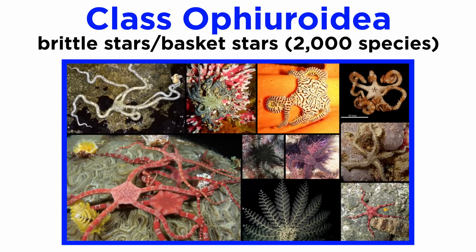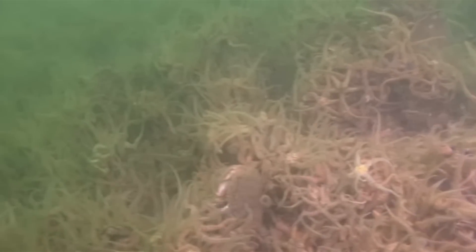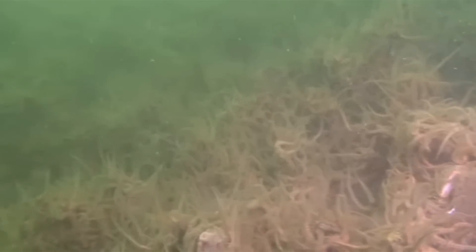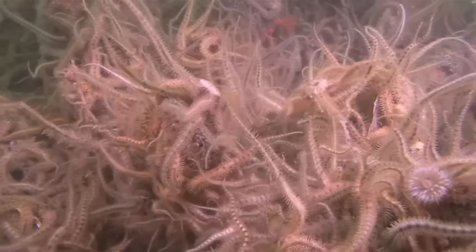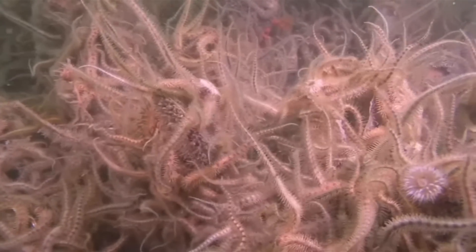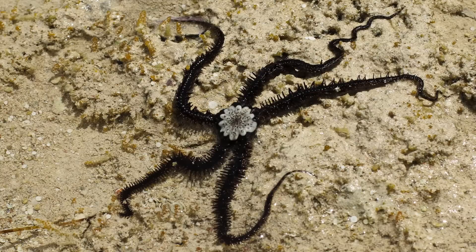Next up, species in class Ophiuroidea are called brittle stars, or basket stars. Of the more than two thousand extant species of brittle stars, more than twelve hundred of them are found in deep ocean waters. They are some of the most common animals in some types of benthic marine habitats, where they may carpet the floor in what appears to be a living mass. Though they superficially resemble the sea stars, they are remarkably different in form and function.